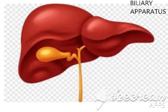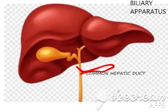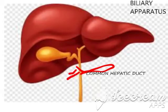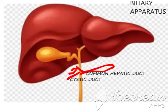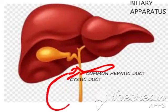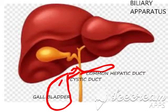The common hepatic duct is present here. So bile leaves the liver and has to be stored somewhere. The first place where it is stored is via the cystic duct. After the common hepatic duct, bile enters into the blind pouch called the gallbladder. This is the place where bile is stored.